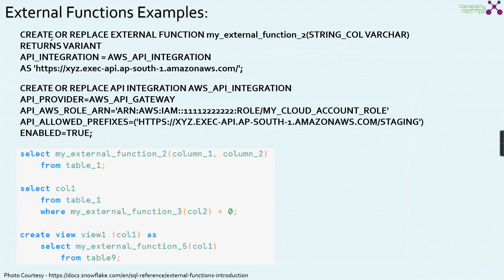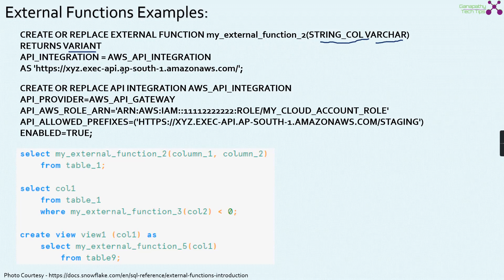Here are examples of external functions as code snippets. You create or replace an external function called my_external_function that takes a varchar string as input and returns a variant as output. You specify the API integration, which acts as the HTTPS proxy service. The API integration provides security information — in this case AWS. The AWS API Gateway is used as the proxy service, the AWS Lambda function is the remote service, and the allowed prefixes for the specific AWS usage are also specified.